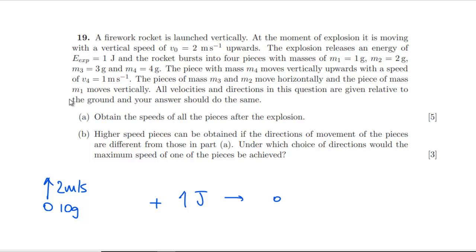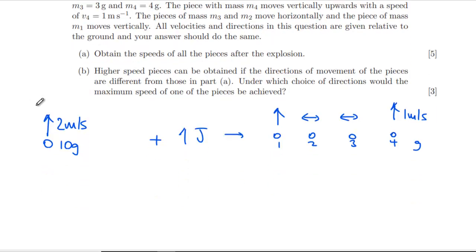Of masses 1, 2, 3, and 4 grams. So the first bit, that was 10 grams. So we've now got m₁, m₂, m₃, and m₄ grams. Piece m₄ moves up at 1 meter per second. m₃ and m₂ move horizontally, and m₁ moves vertically.